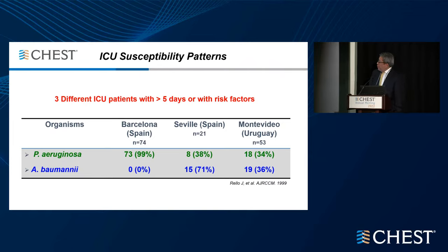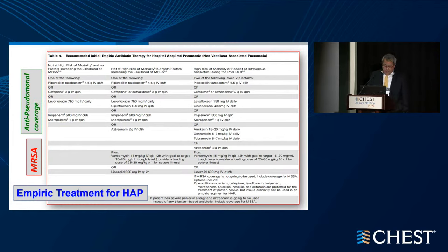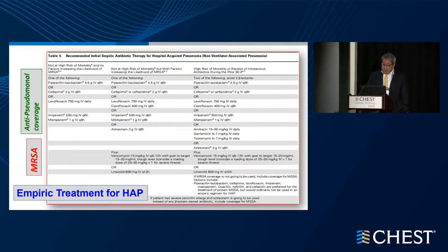This was because of an earlier study showing different ICU units have different percentages of Pseudomonas and Acinetobacter in different countries. For empiric treatment of HAP, MRSA and anti-pseudomonal coverage requires the recommendation as listed, based on their risk for mortality likely related to MRSA, high risk of mortality, and exposure to antibiotics in the past 90 days. You can see the more common antibiotics used in our hospital for these patients, and on the bottom, coverage based on risk for MRSA.